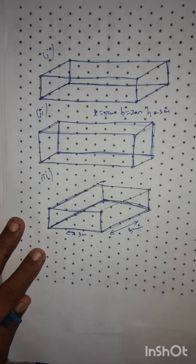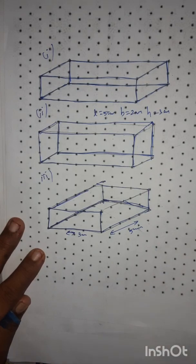So we are getting 3 types of cuboid with the same dimensions. This is about the second sum. Thank you.